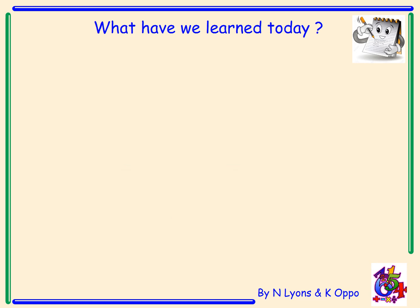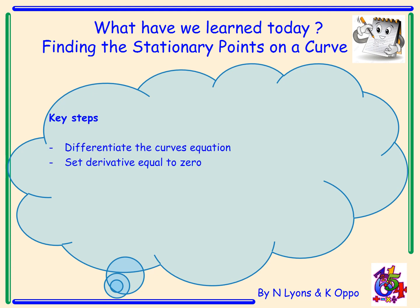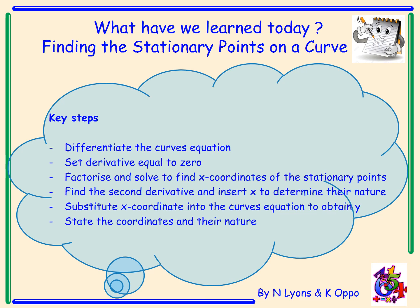So what have we learned today? We've been finding stationary points on a curve. The key steps are: differentiate the curve's equation and set the derivative equal to zero; factorise and solve to find our x-coordinates; find our second derivative and insert x to determine the nature of our stationary points; substitute the x-coordinate into the curve's equation to obtain y; and state the coordinate points of our stationary points and their nature.